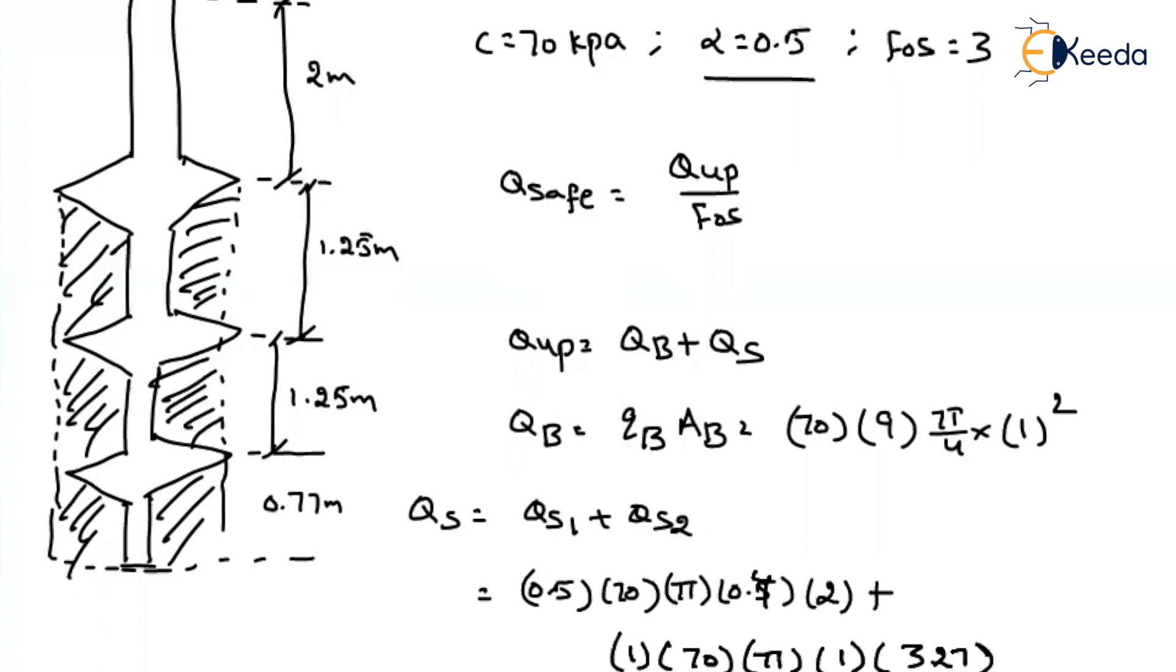So by this we can get the Q_s value. From this you can get the Q_b value. If you find out the magnitude, then your ultimate will be equal to Q_b plus Q_s. Now our motive is to find out the Q_safe. That will be equal to Q_u divided by factor of safety. If you do that, Q_u divided by factor of safety is 3. Then we will get the answer as 388.7 kN.